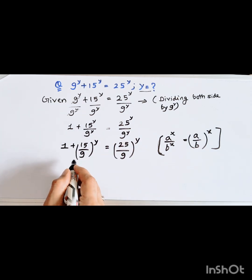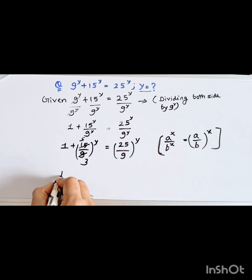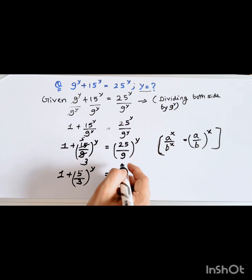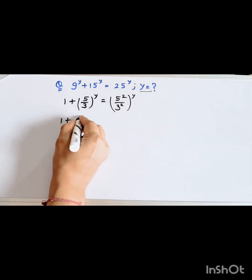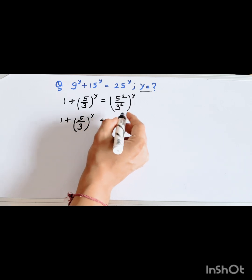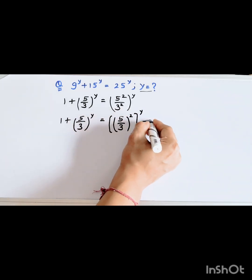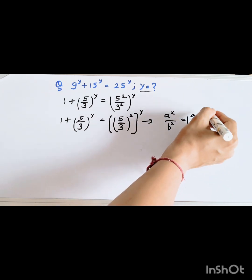So we have 1 plus (5/3) whole to the power y, equal to — since 25 is 5 squared and 9 is 3 squared — (5²/3²) whole to the power y. Applying the same exponent rule gives us (5/3) whole to the power 2y.